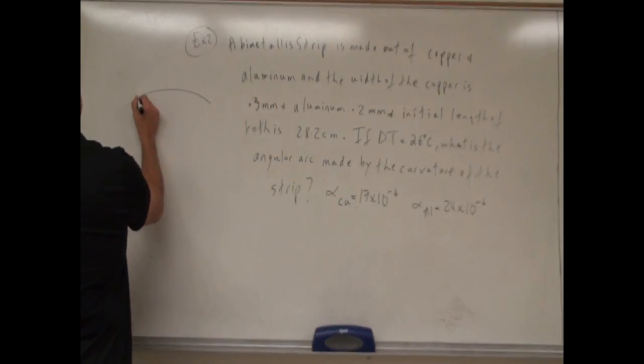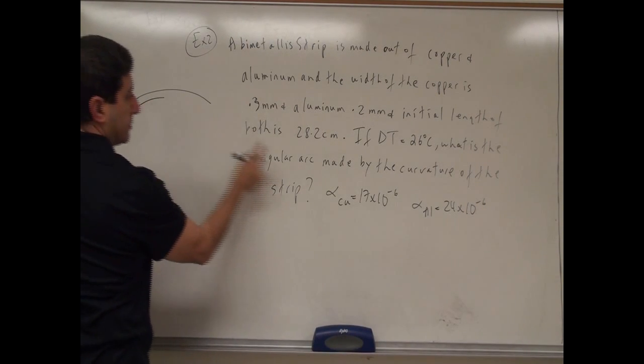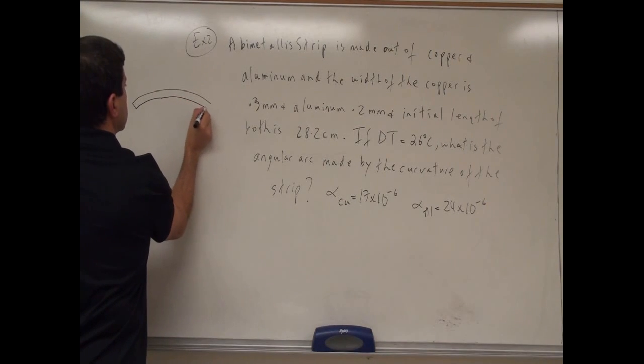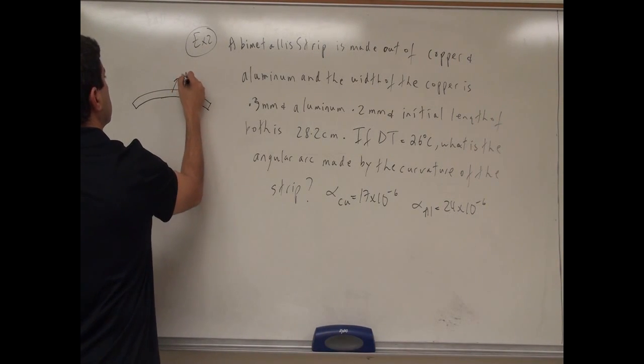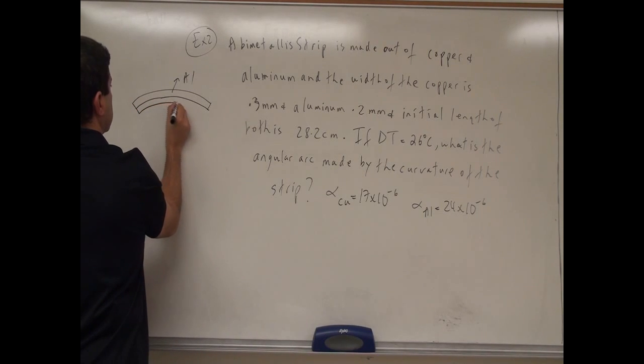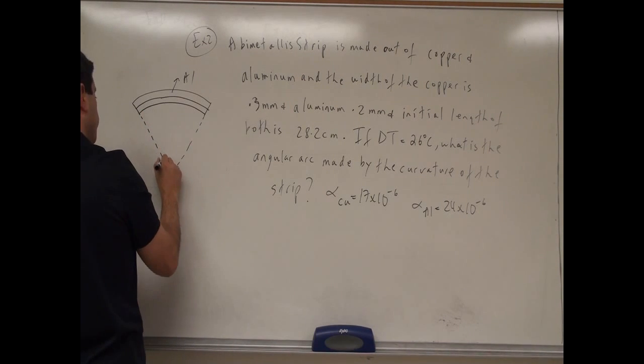So then the way that we set up the problem is that we have the aluminum is going to be the one that stretches more. So we have the aluminum is like this, and then the copper is going to be stretching less, so it's like this. And then it's going to make an arc, and then this is theta.